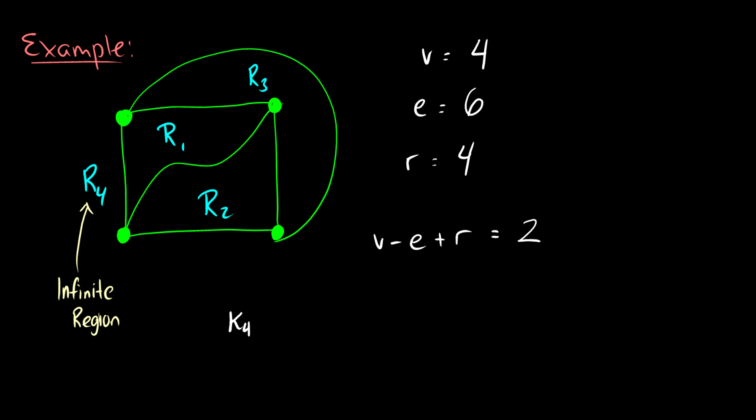So what is a region? A region is any area that is surrounded by edges. This R2 is surrounded by three edges. R1 the same, and R3 is the same idea. We also have the infinite region, which takes place outside the graph — it is all the space outside of your graph. So we have four vertices, six edges, four regions.